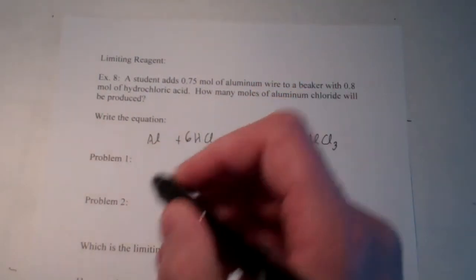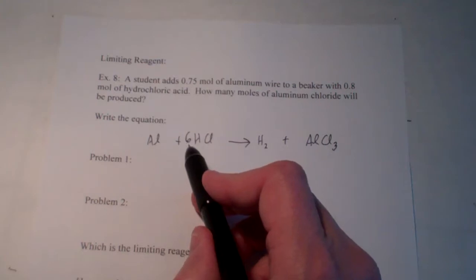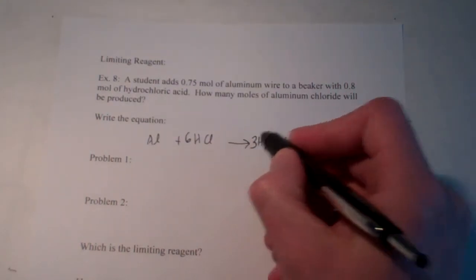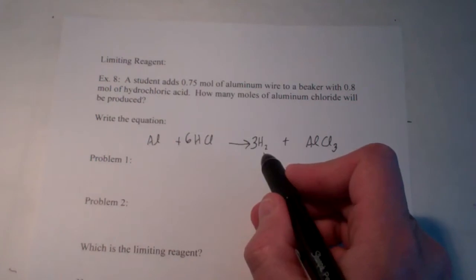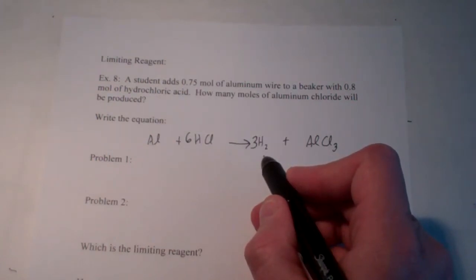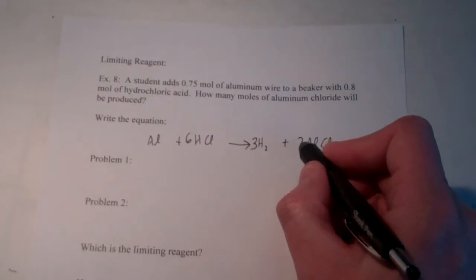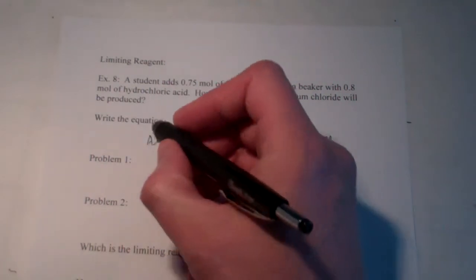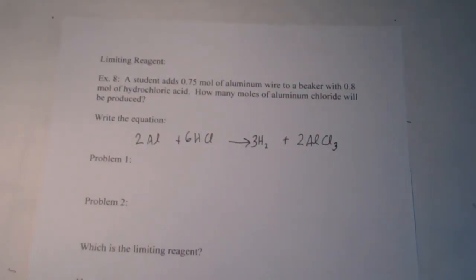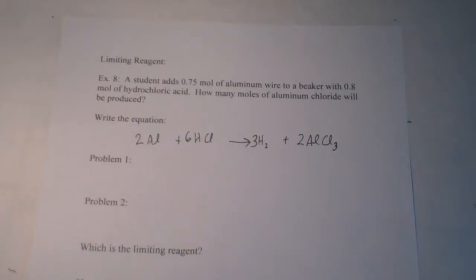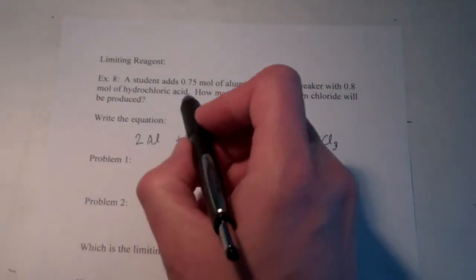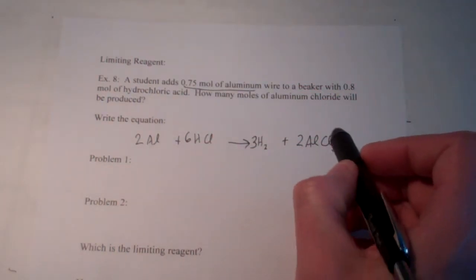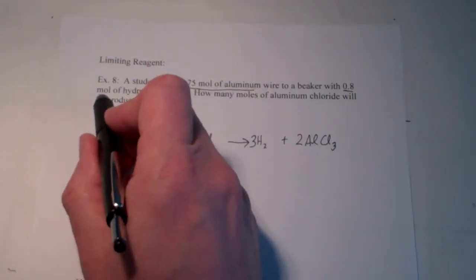I'm going to put a 6 in front of my HCl. That gives me six hydrogens on my reactant side, so I put a 3 in front of H₂ for six hydrogens on the product side. Six chlorines on the reactant side, and putting a 2 in front of AlCl₃ gives me six chlorines on the product side. Then a 2 in front of aluminum balances the equation nicely. Now I have to do the problem twice, just like I did with my fudge sauce recipe — once for each reagent. I have 0.75 moles of aluminum and 0.8 moles of hydrochloric acid.